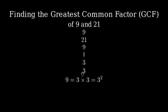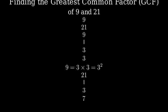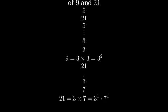Now let's factor 21. 21 can be divided by 3 to get 7. Since both 3 and 7 are prime numbers, we can write 21 as 3 times 7.